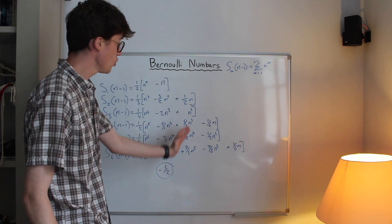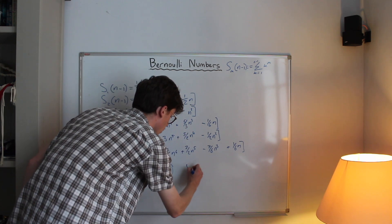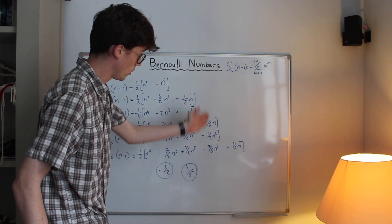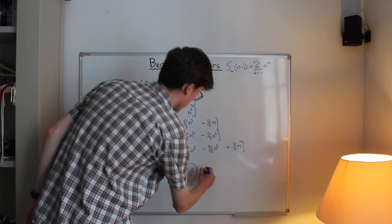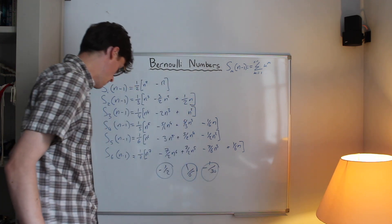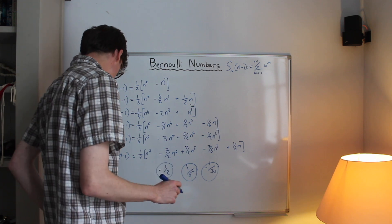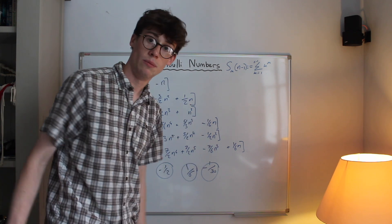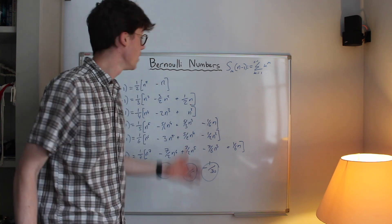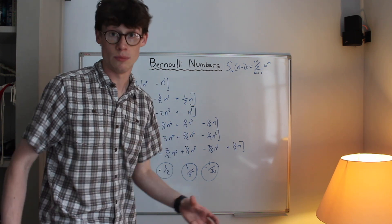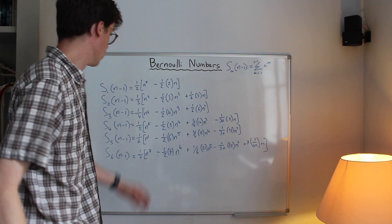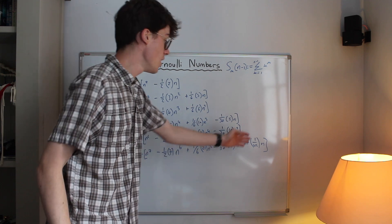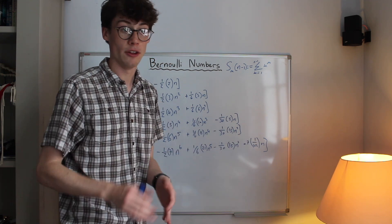Every coefficient in the third column is a multiple of 1/6, and every coefficient in the next column is a multiple of −1/30. This suggests these numbers might have some importance, since they keep appearing in these columns. Bernoulli's next step was to factor those out as well to see what's left. Welcome back — we've now factored out −1/2 from this column, 1/6 from this column, −1/30 from the next, and 1/42 from the one after.